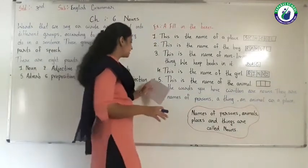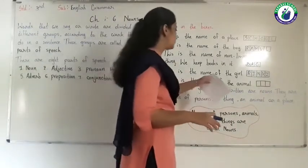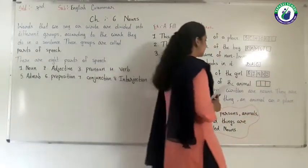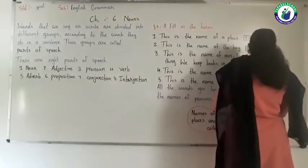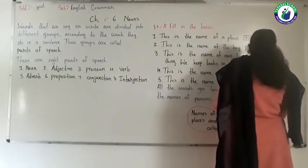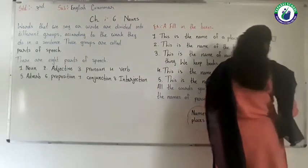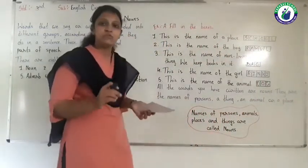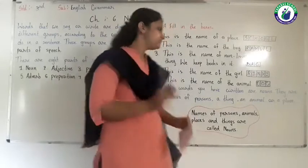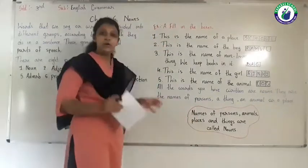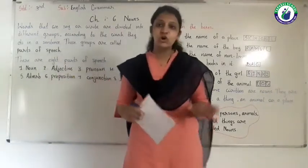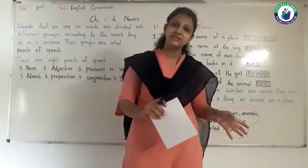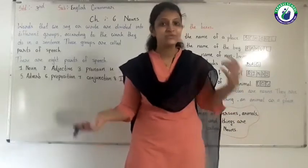Now let's see number 5: this is the name of the animal. So I write here — dog. Dog is the name of an animal. So nouns are the names of persons, places, animals, birds and things.